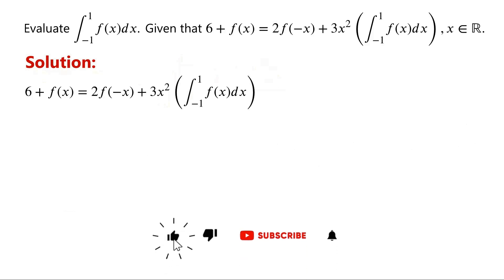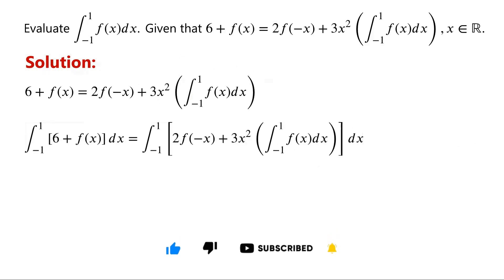If we integrate the original identity between negative 1 and 1, we have the integral of 6 plus f of x, all with respect to x from negative 1 to 1, equals the integral of 2 times f of negative x plus 3x squared times the integral of f of x, dx, with respect to x from negative 1 to 1.